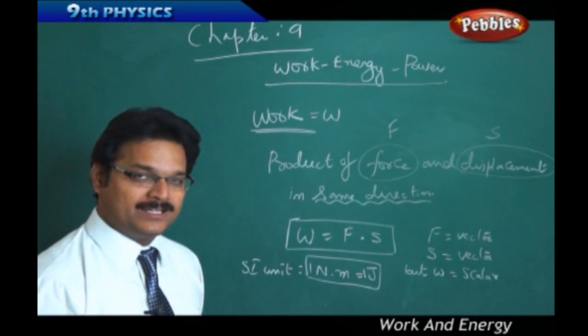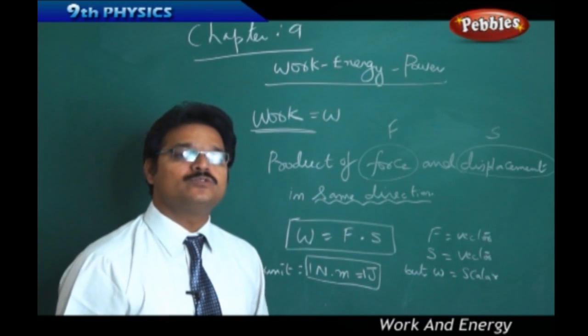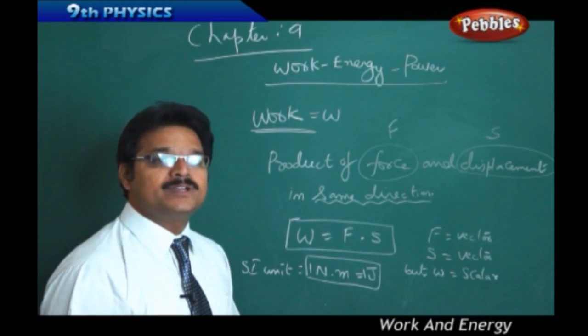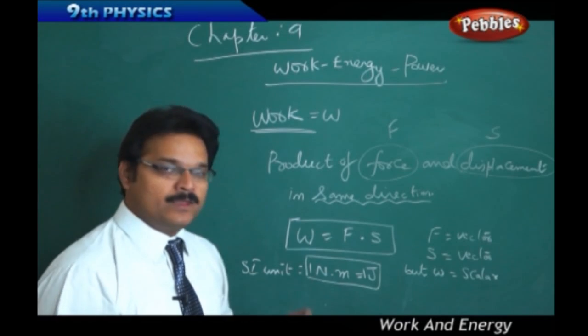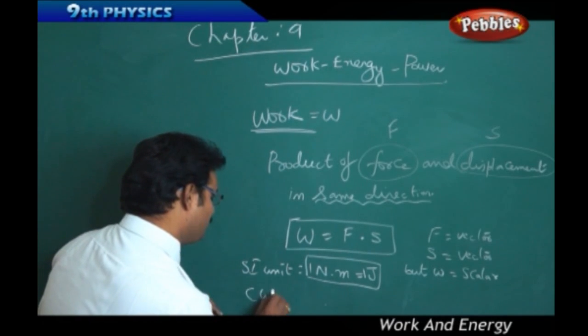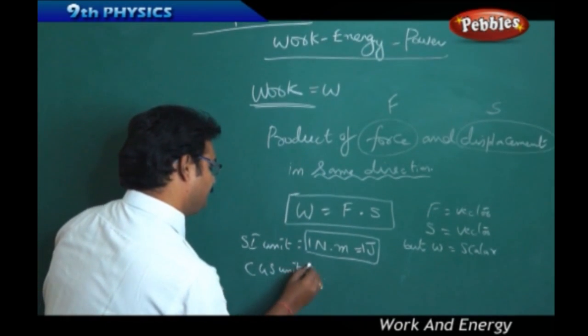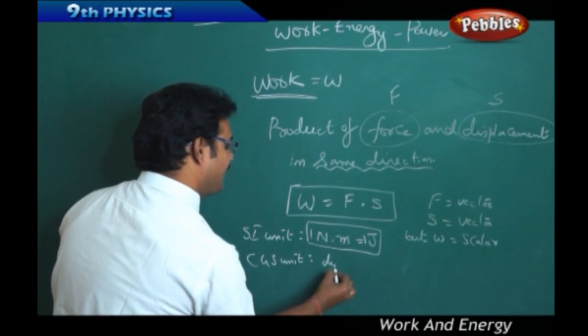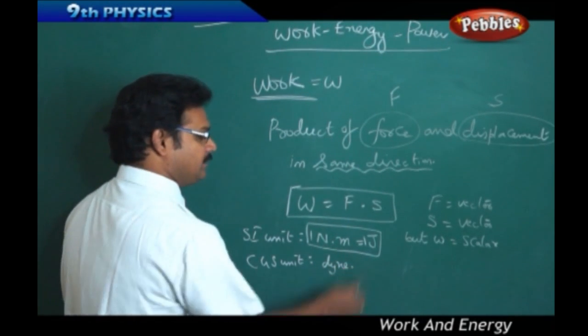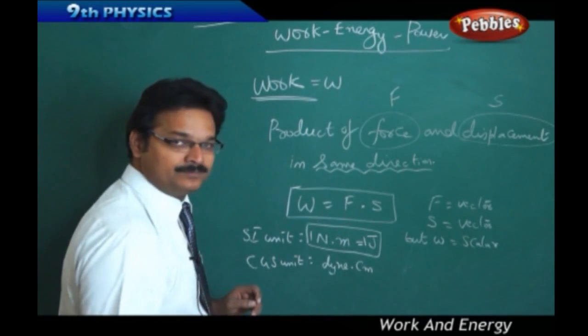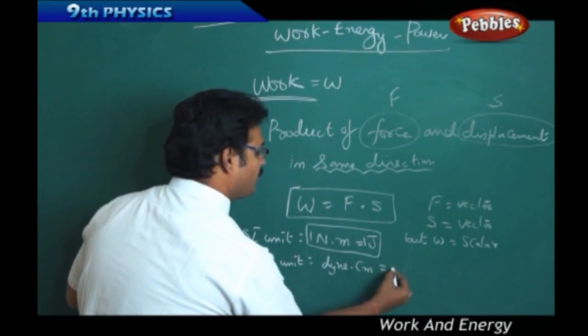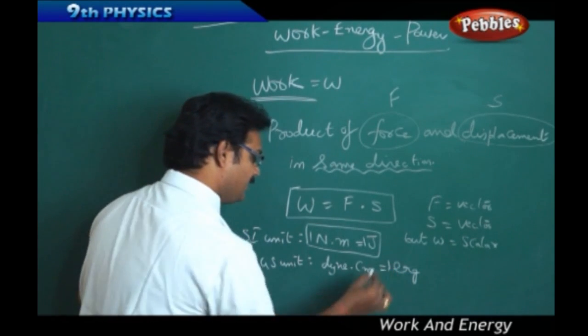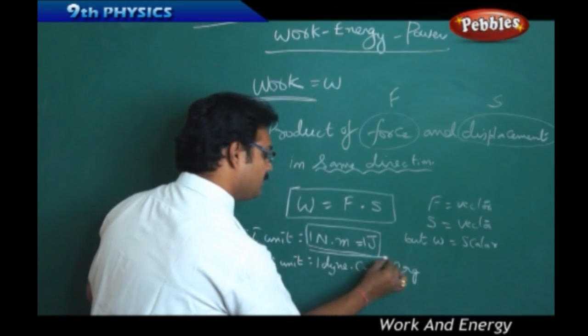Suppose, if I say that I have done 200 Joules of work, it is also equal to, I have done 200 Newton meters of work. Both are same. Now, CGS unit of work. Force CGS unit is dyne. Displacement CGS unit is centimeter. This dyne centimeter can also be called as Ergs.